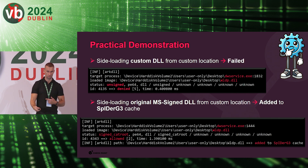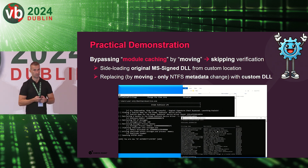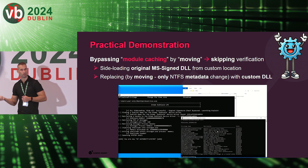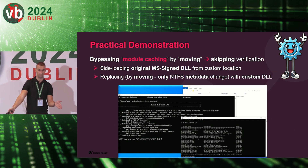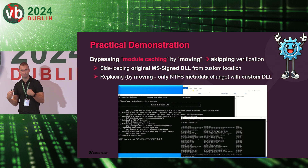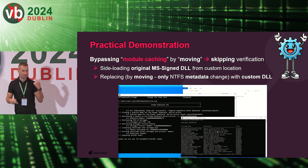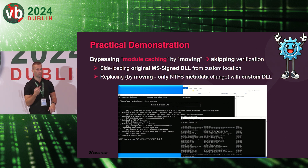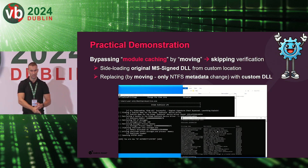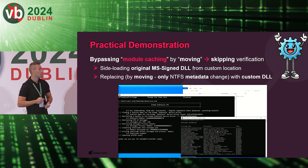We bypassed the module caching by using a move operation. What we did: we first sideloaded the original Microsoft-signed DLL from our custom location — for example from the desktop. Then we replaced this original Microsoft-signed library with our own custom library, but by moving it, not copying. We didn't create a new file — we moved it. On the NTFS file system, this results only in a metadata change, which is not triggered in the file system filter driver used by Dr. Web. So the filter driver is blind to this action. By chaining all of these introduced vulnerabilities, we were able to achieve local privilege escalation even in Dr. Web Security Space.